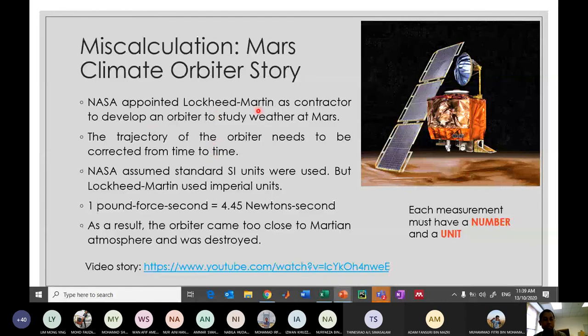NASA appointed Lockheed Martin as a contractor to fabricate the orbiter. NASA assumed standard SI units were used, but actually Lockheed Martin used imperial units. When they wanted to correct the direction of the orbiter each time, they put into the computer software the wrong value. When Lockheed Martin provided the value of one, NASA assumed the value was one newton per second, but actually it was one pound-force second. There is a difference of a factor by 4.45. This was the main reason why when the orbiter approached the atmosphere of planet Mars, it got destroyed.